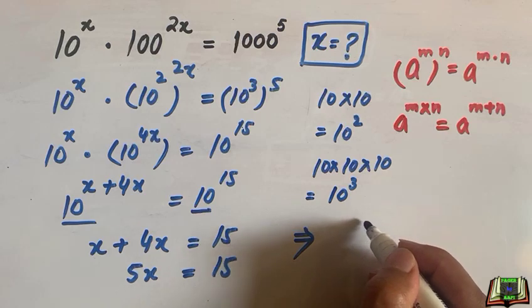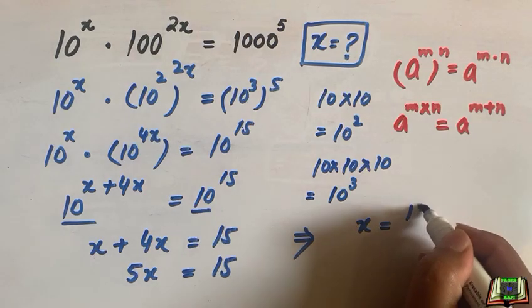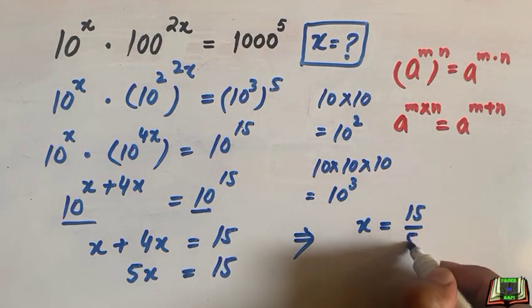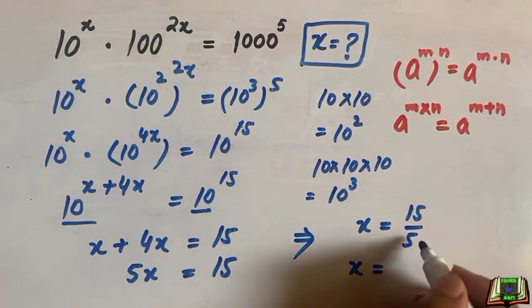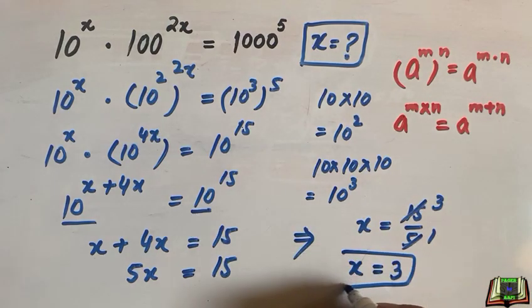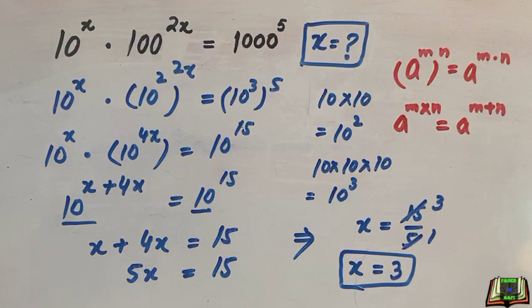After further simplification, x is equal to 15 and this 5 will be taken to right hand side and it will be divided. 5 one time is 5, 3 times is 15. x is equal to 3 is the final and required answer.